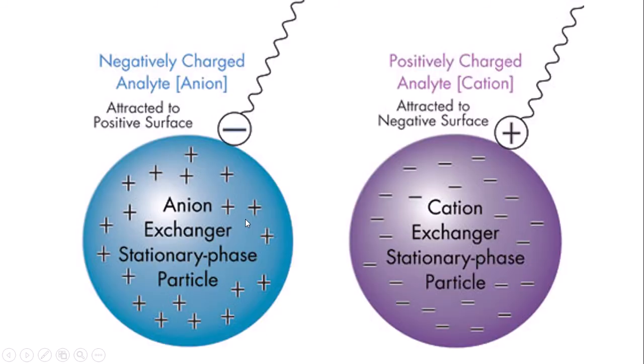The anion exchanger stationary phase particle is actually positively charged and cationic in nature. The cation exchanger is actually negatively charged and anionic in nature. To avoid confusion: the term 'anionic exchanger' refers to the charge of the exchanger itself, while 'anion exchanger' refers to the ions it is exchanging. It is better to learn names based on the ions they exchange.